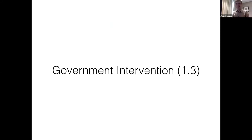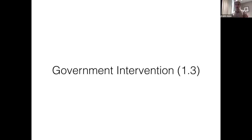Hi ladies and gentlemen, today we're going to be talking about the first topic under the category of government intervention. This is section 1.3 in the Econ syllabus. Essentially, this is looking at how can the government intervene in specific markets — what are specific things that they can do if they wish to accomplish any goals? The first one we're going to start off with, probably the easiest government intervention to understand because we're all quite familiar with it, is taxes.